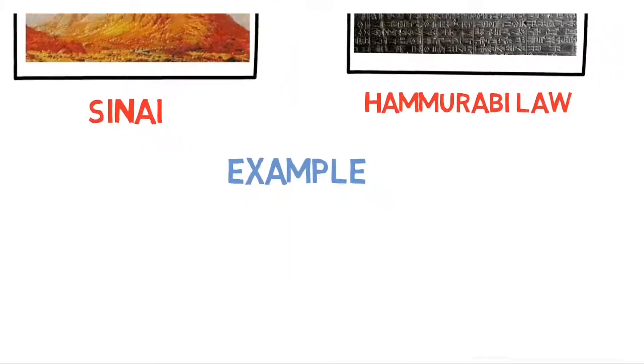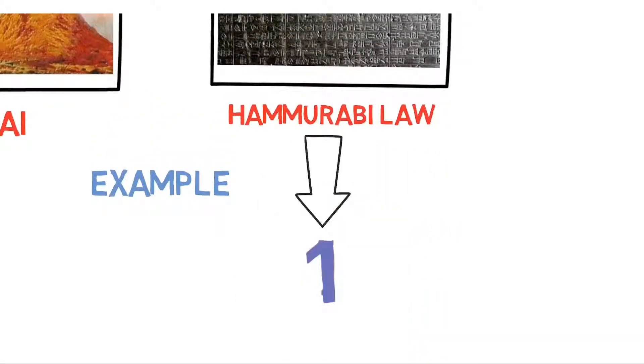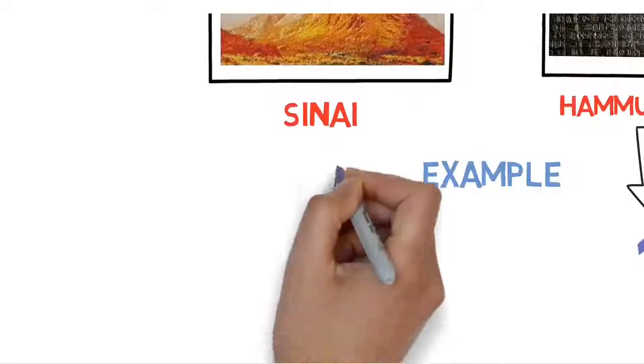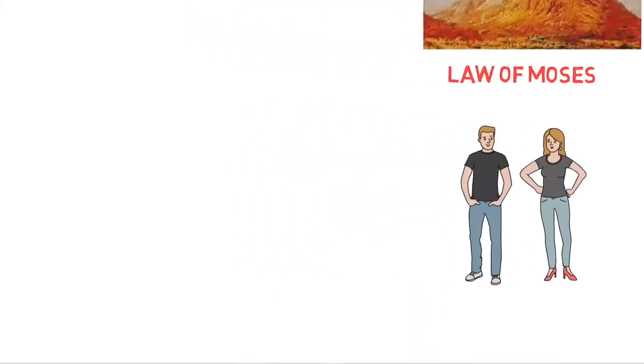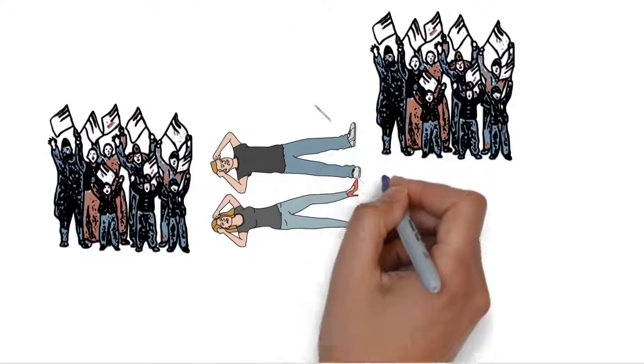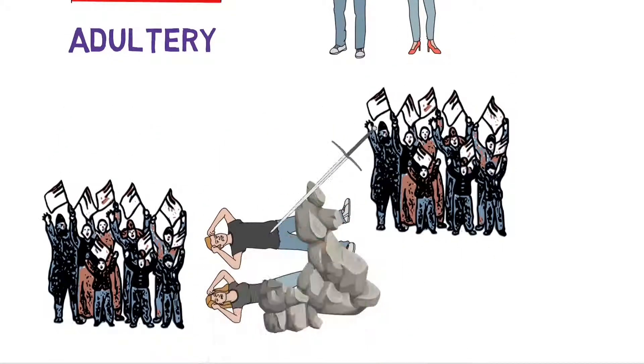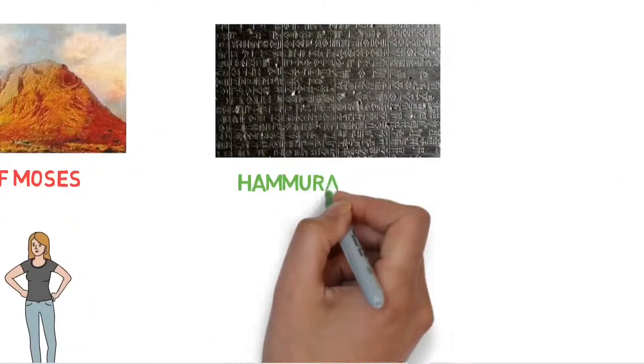Let me give you an example. Taking one law from Hammurabi law and one law from Mount Sinai law. Law of Moses says if a man and a woman is caught in the act of adultery, then both the parties should be put to death. There is no partiality in the execution of judgment.